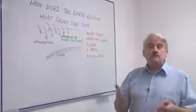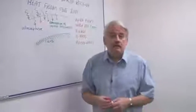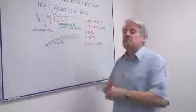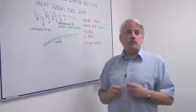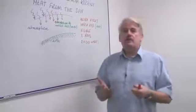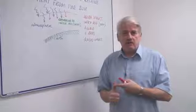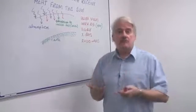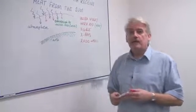Well, it doesn't receive heat directly. The space between the earth and the sun of course is a vacuum. It doesn't contain any material, so heat can't be conducted and you can't get any convection. All you can get is radiation.